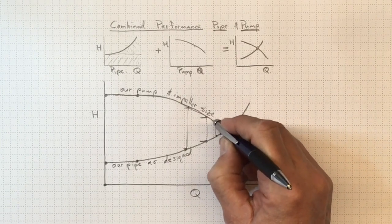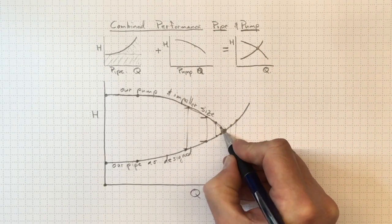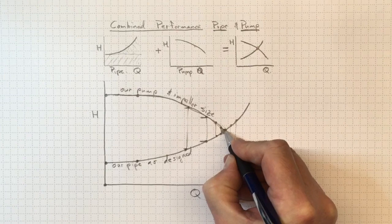So we always expect, once the pump and the piping system are in equilibrium, that we'll wind up back at this operating point where those two lines cross.